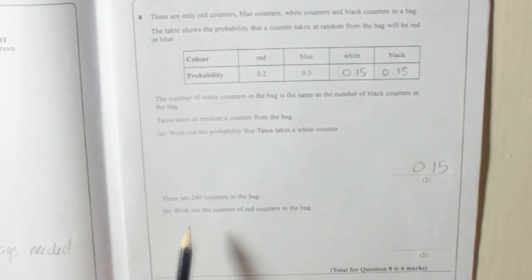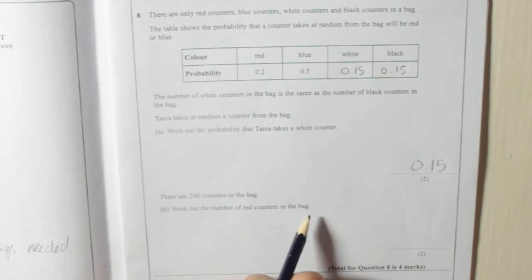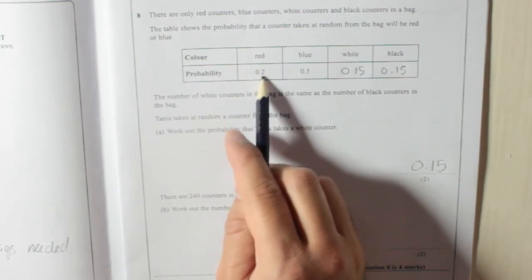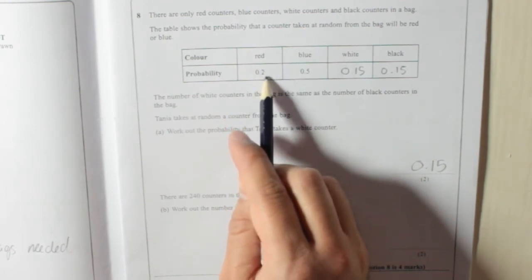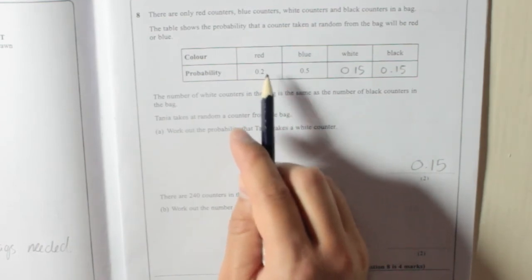There are 240 counters in the bag. Work out the number of red counters in the bag. So if the probability of getting red is 0.2, that is because the proportion of red counters in the bag is 0.2.